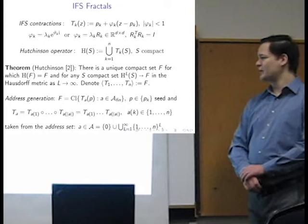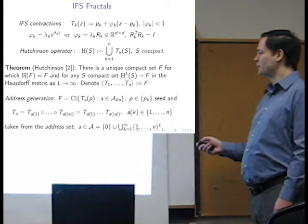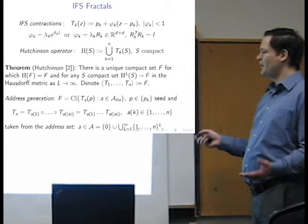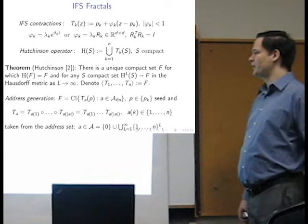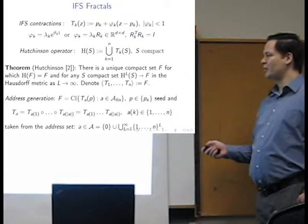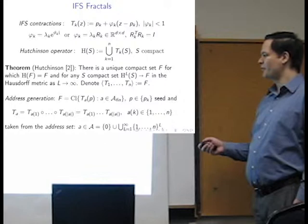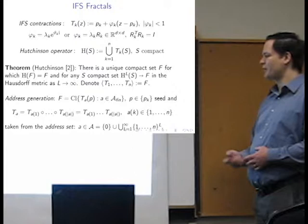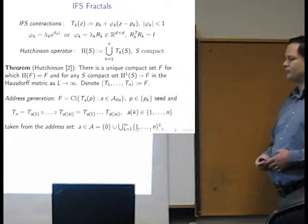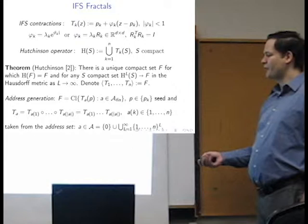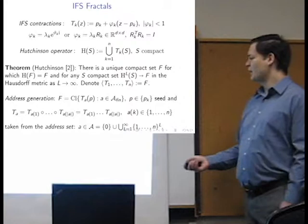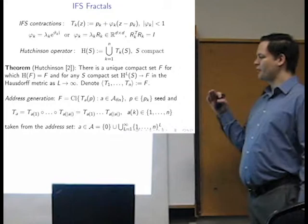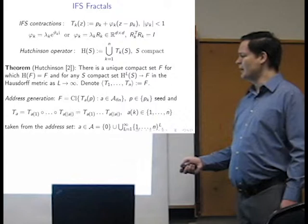So just to start with the notations and the definitions. IFS fractals are generated by contractions. So this is in fixed-point form. So as you can see, if you apply H to PK, you will get PK back. So the factors in some sort of norm, either the Euclidean or another norm, need to be contractive. So I'm going to be looking at planar IFS fractals. So just representing the factors as complex numbers. Or, if you go to higher dimensions, then you will need a rotation matrix. We'll be working with the Hutchinson operator over compact sets.